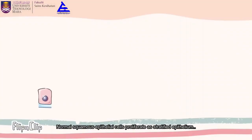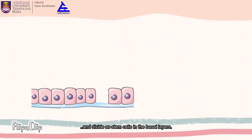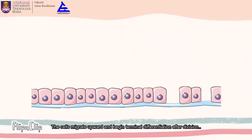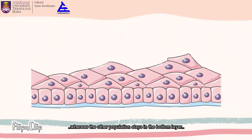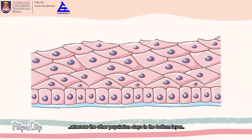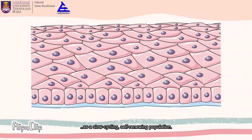Normal squamous epithelial cells proliferate as stratified epithelium and divide as stem cells in the basal layers. The cells migrate upward and begin terminal differentiation after divisions, whereas the other population stays in the bottom layer as a slow-cycling, self-renewing population.